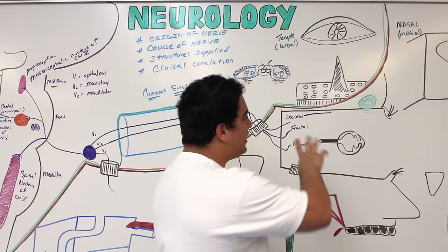V2 also gives off a meningeal (dural) branch as it passes through the foramen rotundum, supplying the dura mater, which is pain-sensitive. The three main branches from the pterygopalatine fossa are the posterior superior alveolar nerve, the infraorbital nerve, and the zygomatic nerve.